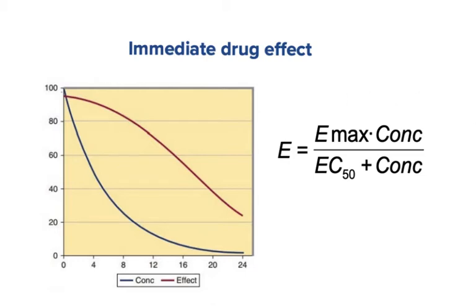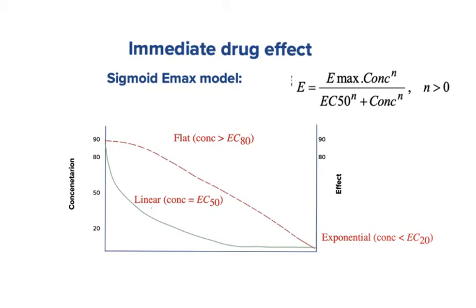Now let's discuss the sigmoid model. The sigmoid model is basically the same as the Emax model with the addition of the Hill coefficient represented by n. n is a slope parameter. The slope demonstrates the ability of a drug to produce an effect, and the steeper the curve the quicker the drug effect. n must be above zero; however, when n equals one, the sigmoid Emax model will be equal to the Emax model. Both of these models can give us a numerical value of drug efficacy at any given concentration.